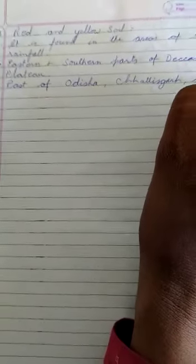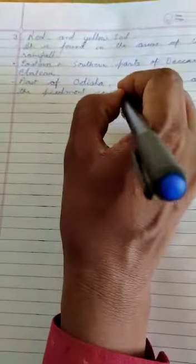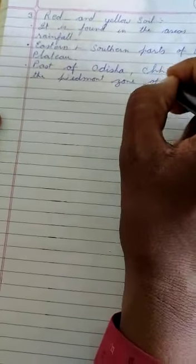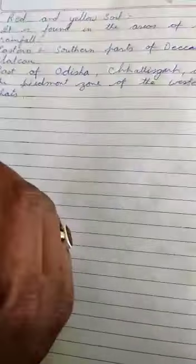Then we find some red and yellow soil along the piedmont zone of the Western Ghats. These are the areas where you can find red soil.